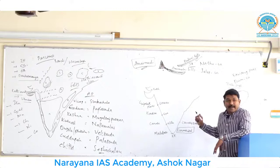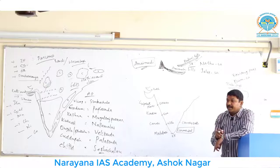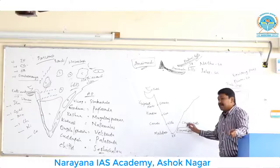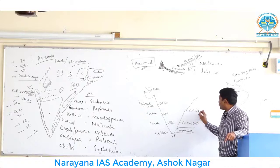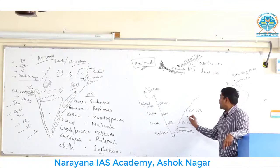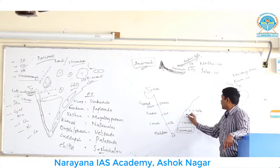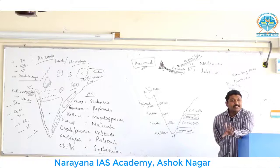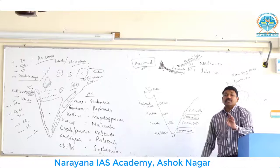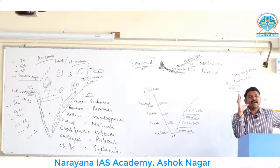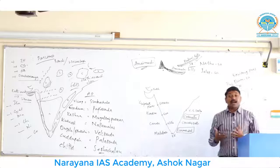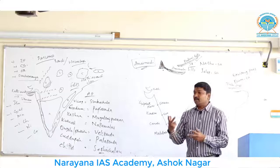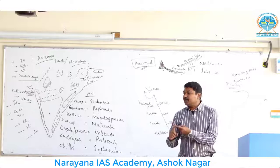Right from the Kaveri delta till the Krishna-Godavari delta, the coast is called the Carnatic coast. This has nothing to do with the state of Karnataka. Carnatic music and the classical dances Kuchipudi and Bharatanatyam developed here in this coastal region, between the Krishna and Kaveri delta areas.